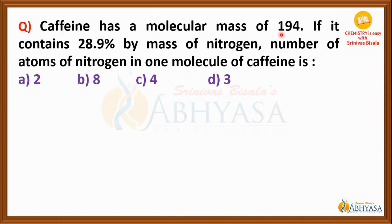Let us see the numerical. Caffeine has a molecular mass of 194. If it contains 28.9% by mass of nitrogen, calculate the number of atoms of nitrogen in one molecule of caffeine. Here, the molecular mass of caffeine is given as 194, and the percentage mass of nitrogen is given as 28.9%. From this information, we need to find out the number of nitrogen atoms present in one molecule of caffeine.